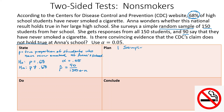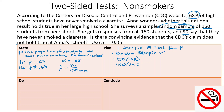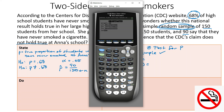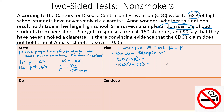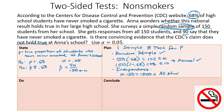The test name is a one-sample z-test for p. Random sample — stated in the problem, check. Normal condition: n × p₀ = 150 × 0.68 = 102, and n × (1 − p₀) = 150 × 0.32 = 48. Both are ≥ 10 — check. Independence: 10 × 150 = 1,500; the problem says it's a large school, so there are more than 1,500 students — check.